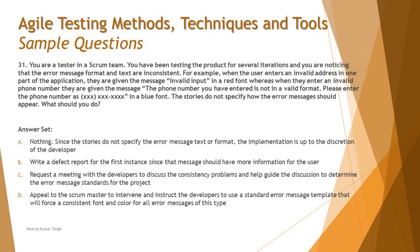Option C says: request a meeting with the developer to discuss the consistency problem and help guide the discussion to determine the error message standard for the project. This is exactly right. We don't have requirements specified, but we can have a discussion with the developer to set up an expectation and standardization of error messages. Setting the expectation is the golden rule when you have missing information, and that should happen in collaboration with the developer.